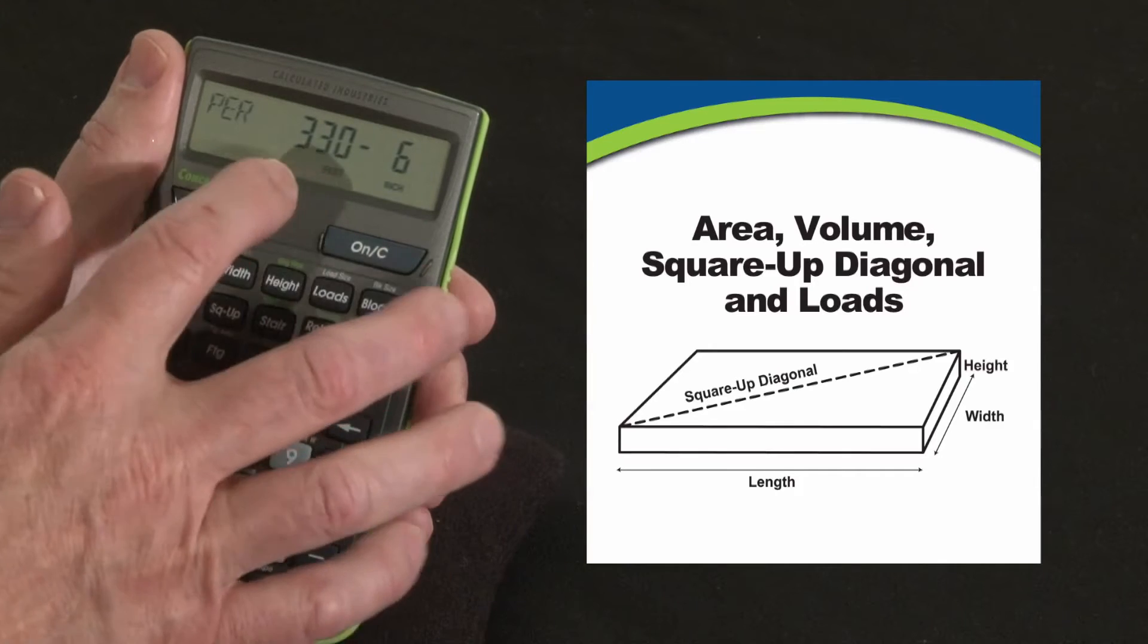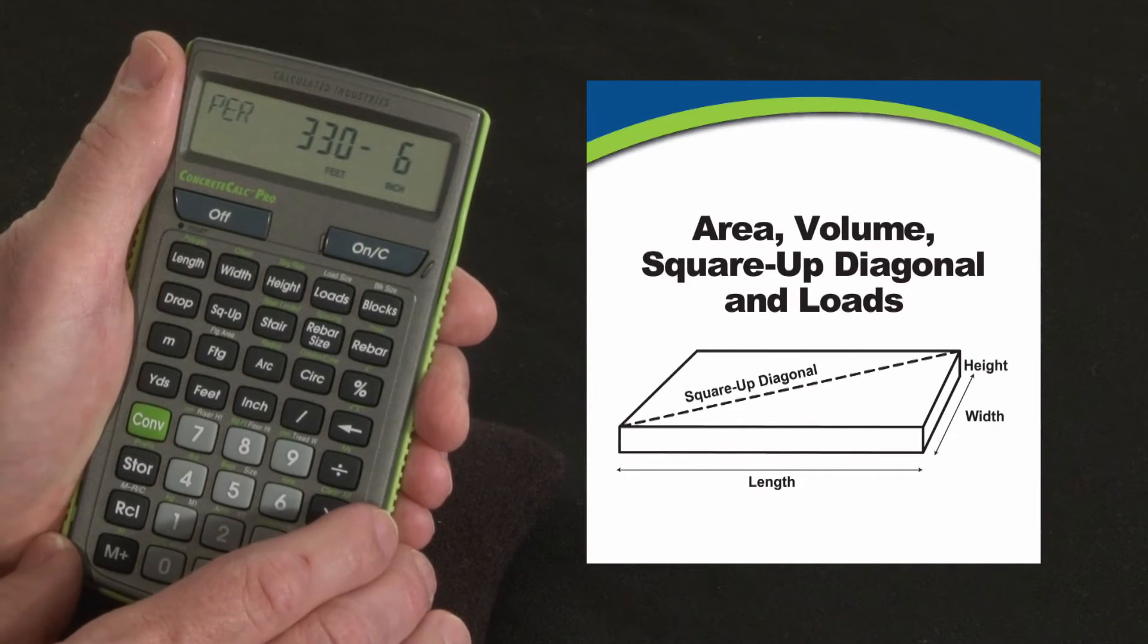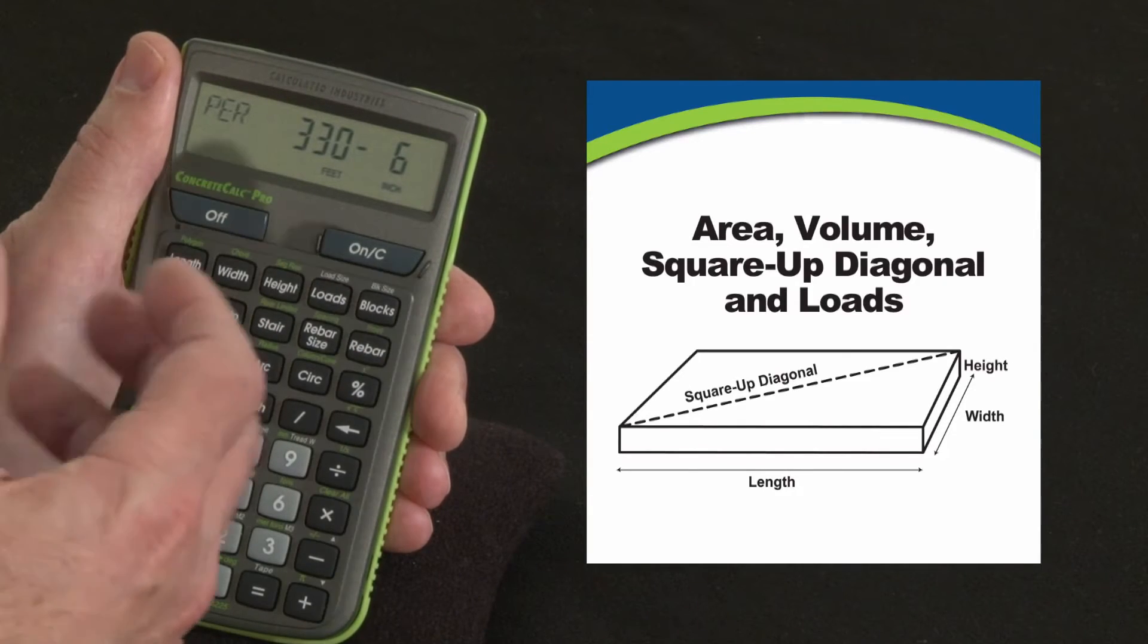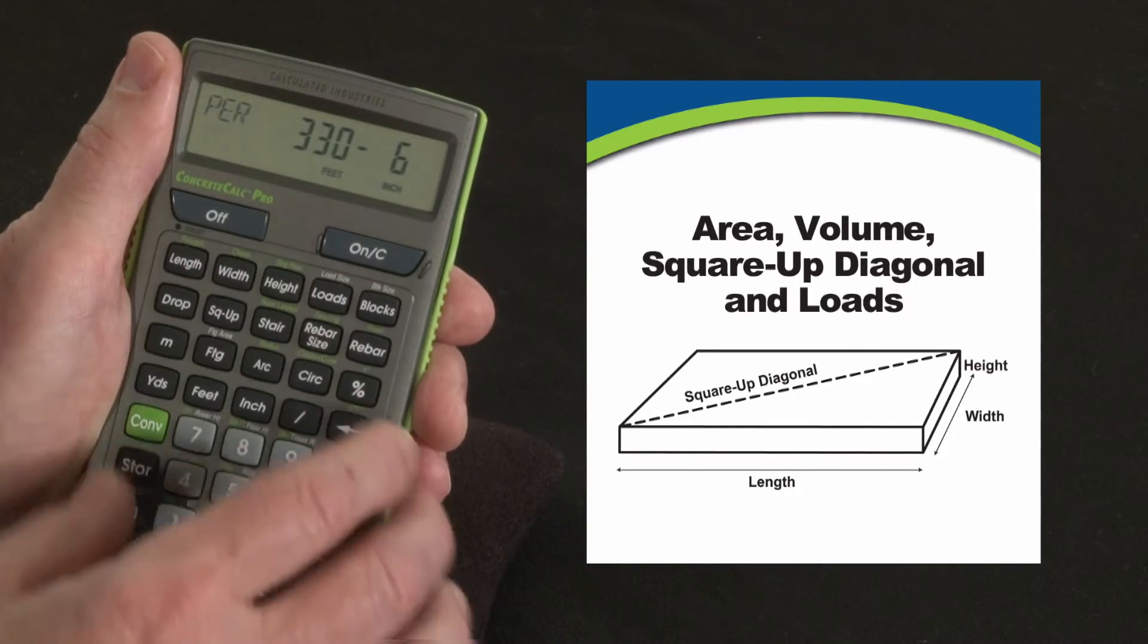Press it again, perimeter: we've got 330 feet and 6 inches all the way around this. So if you're setting forms, you're going to need that many lineal feet of form boards, or any kind of other trim or treatment that goes around the perimeter.